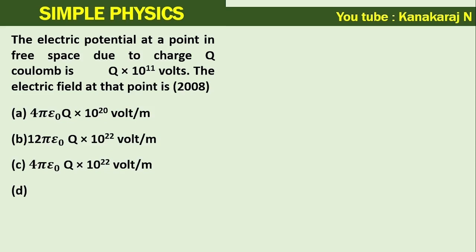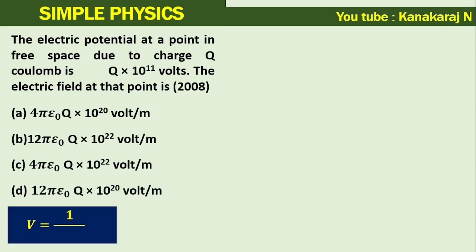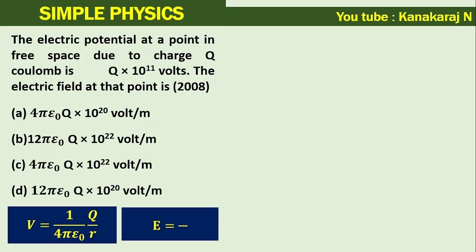To find the answer for this particular question we need to know 2 formulas. One is the potential at a point: v equals 1 upon 4 pi epsilon r times q upon r. The other one is the electric field is the potential gradient. So, e equals v upon r.